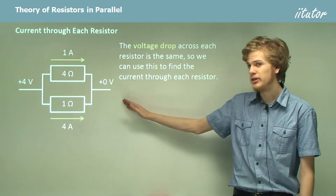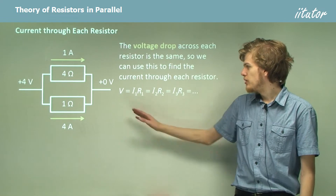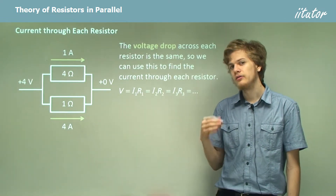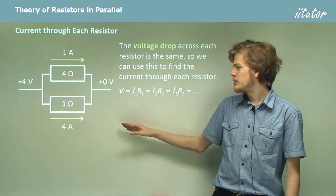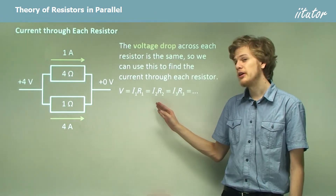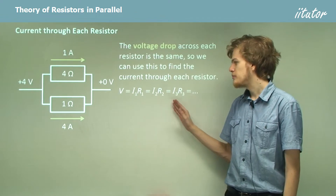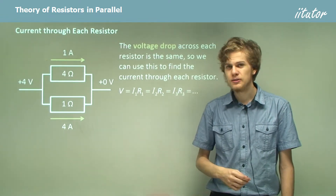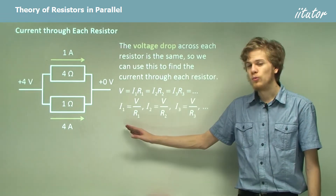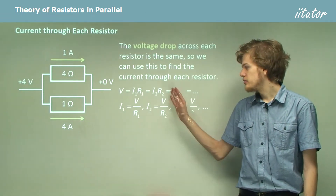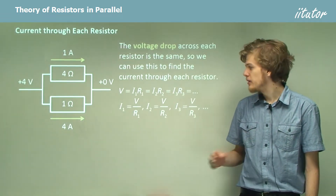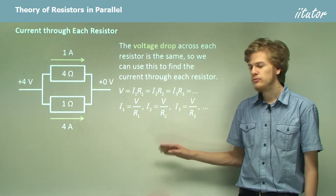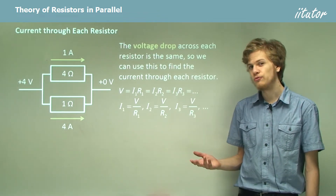You can see an example drawn here. V will equal I1 R1 — that is the current times the resistance of one branch — which will equal the current times resistance of the next branch, and so on. In this diagram there are only two branches. So I1, using a simple rearrangement of the first equation, can be found with V over R1; I2 can be V over R2; I3 can be V over R3, and so on and so forth.